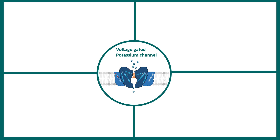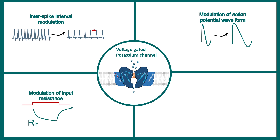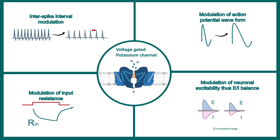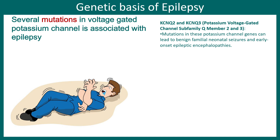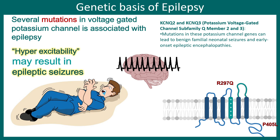Voltage-gated potassium channels and sodium channels are highly associated with the progression of epilepsy. Voltage-gated potassium channels modulate inter-spike interval, action potential waveform, input resistance, and the overall excitatory-inhibitory balance. Recent research has shown that KCNQ channels — especially KCNQ2 and KCNQ3 — are associated with epilepsy, with specific gene mutations in these channels discovered to lead to epilepsy.